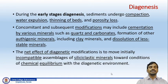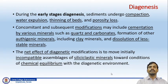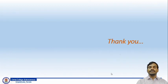The net effect of diagenetic modifications is to move initially incompatible assemblages of siliciclastic minerals towards a condition of chemical equilibrium with the diagenetic environment. Incompatible assemblages of minerals will be removed from the system, and those minerals which are in chemical equilibrium with the new diagenetic environment will sustain. With this, we complete the introduction to the diagenetic process. Thank you.